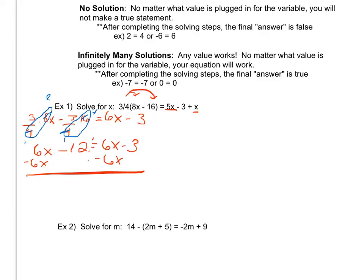6x - 6x is nothing, they're gone. The -12 drops down. 6x - 6x is nothing, it's gone. The -3 drops down.